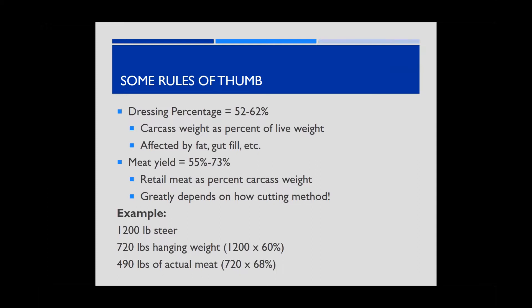Basic rules of thumb: dress percentages are typically in the low 60s for finished cattle, but can be in the low 50s for cows. Carcass weight as a percent of live weight is largely affected by gut fill, fat, and shrink. Meat yield — actual pounds of packaged meat as a percent of carcass weight — ranges from the mid-50s to the lower 70s depending on cutting method.